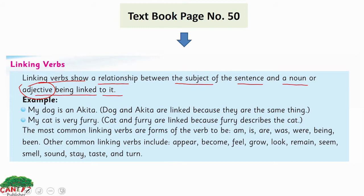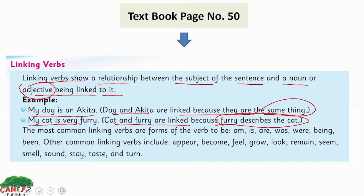Look at the examples. 'My dog is an akita' — dog and akita are linked because they are the same thing. 'My cat is very furry' — cat and furry are linked because furry describes the cat. Furry is an adjective here. Furry means soft-haired. 'My cat is furry' — furry is a quality, so it is an adjective here. In both sentences, 'is' is the linking verb, connecting the noun and the adjective or noun with one another.